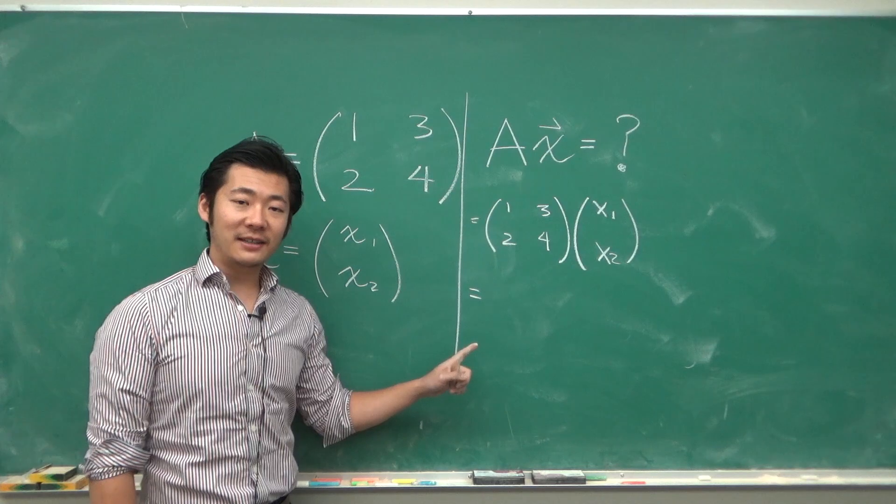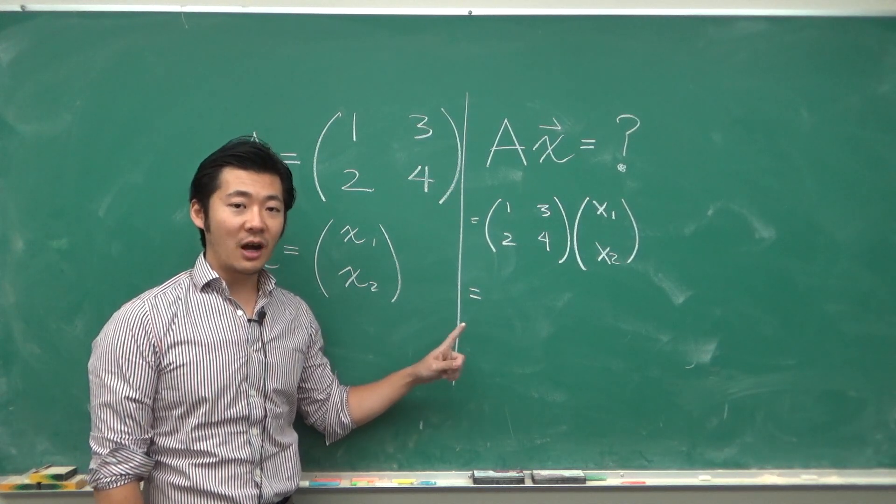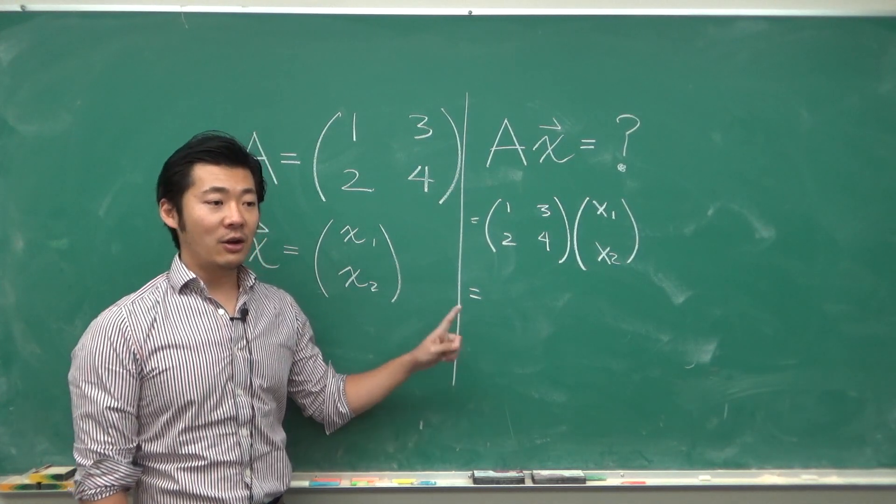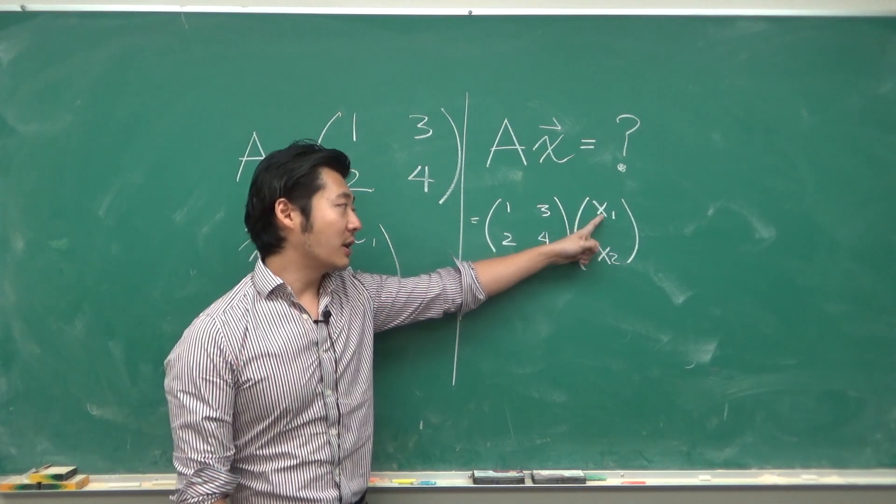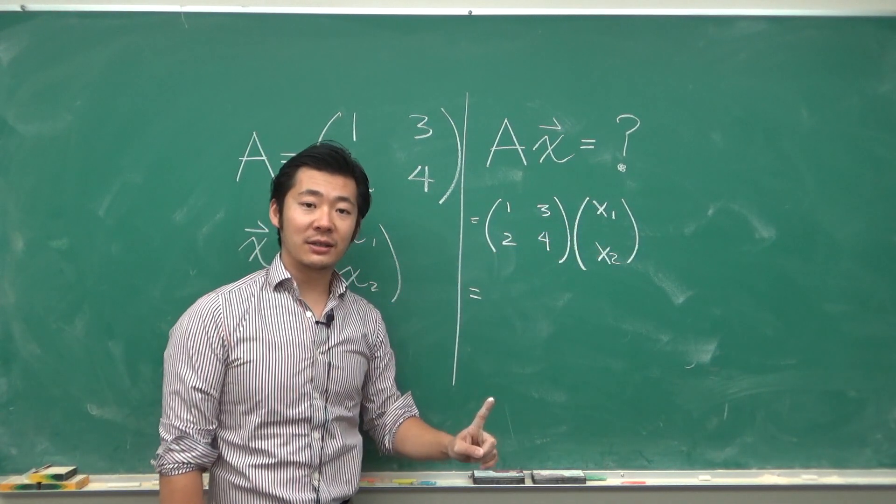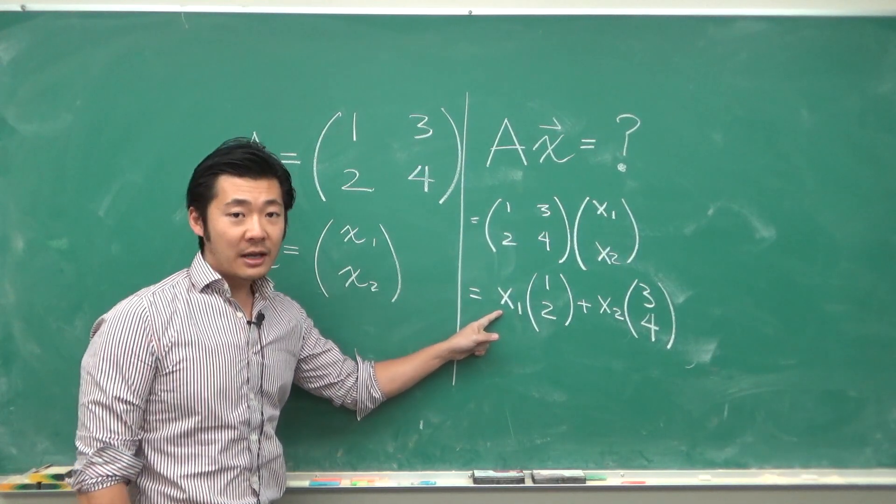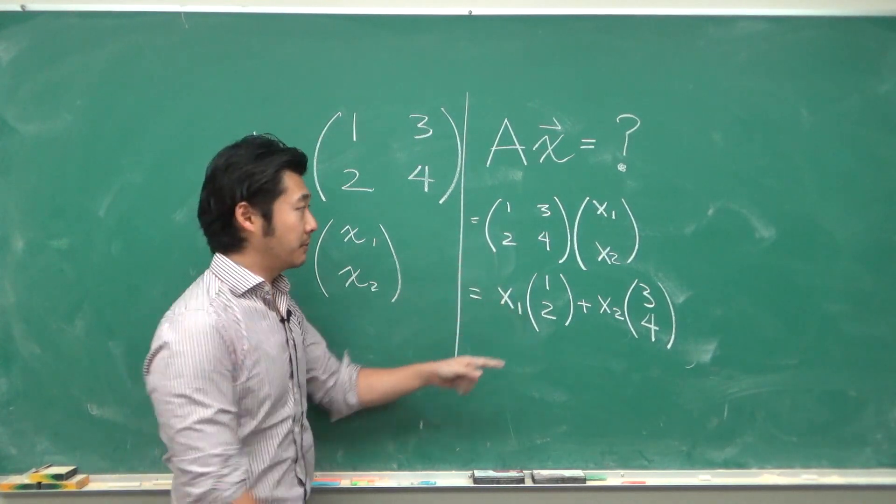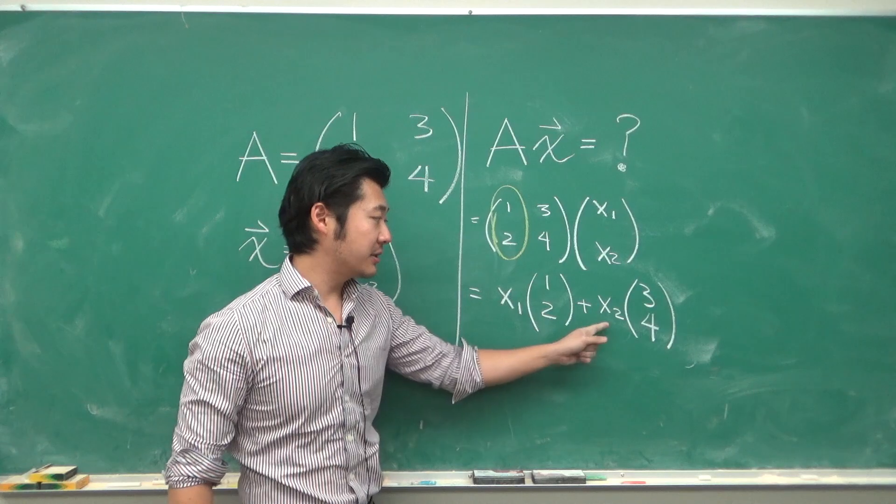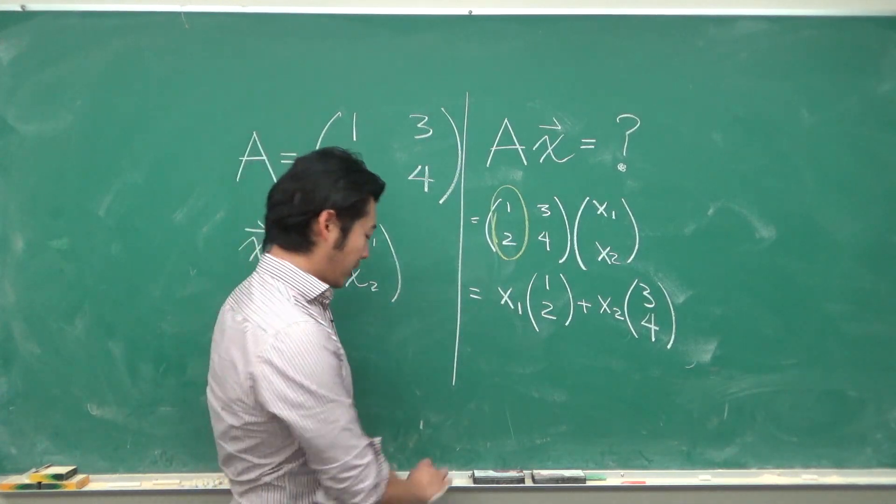The definition is we take the linear combinations of the columns of the matrix A with the entries of the column vector X as their weight. What I mean is the scalar x1 times the column [1, 2] and the scalar x2 times the column [3, 4].